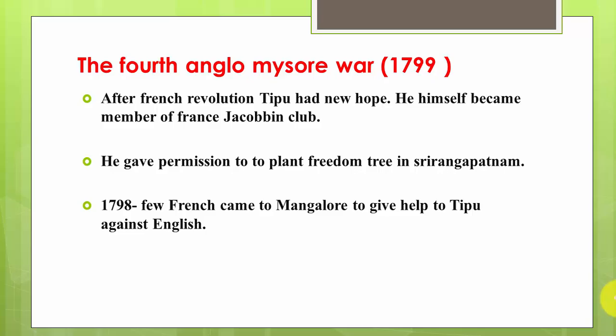Because of Tipu Sultan's political activities, the British started preparing for another war against Mysore, leading to the fourth Anglo-Mysore war, which took place in 1799.